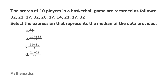The scores of 10 players in a basketball game are recorded as follows: 32, 21, 17, 32, 26, 17, 14, 21, 17, and 32. Select the expression that represents the median of the data provided. Pause the video, try and complete this problem, and come back when you're ready for the solution.